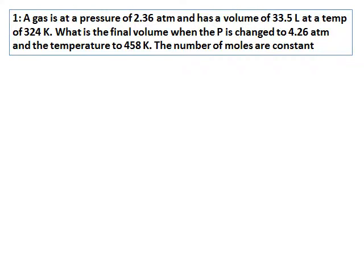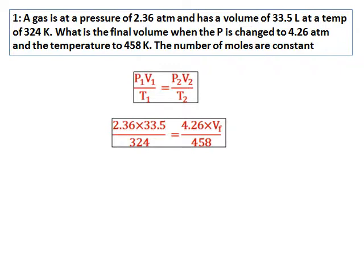Combined gas law question: a gas is at 2.36 atmospheres with a volume of 33.5 liters at 324 Kelvin. What is the final volume when pressure changes to 4.26 atmospheres and temperature changes to 458 Kelvin? The number of moles is constant. Since pressure, volume, and temperature are all changing, use the combined gas law: P1V1/T1 = P2V2/T2. P1, V1, T1, and P2 are all given; temperature is already in Kelvin. Substitute all values and solve for V2.